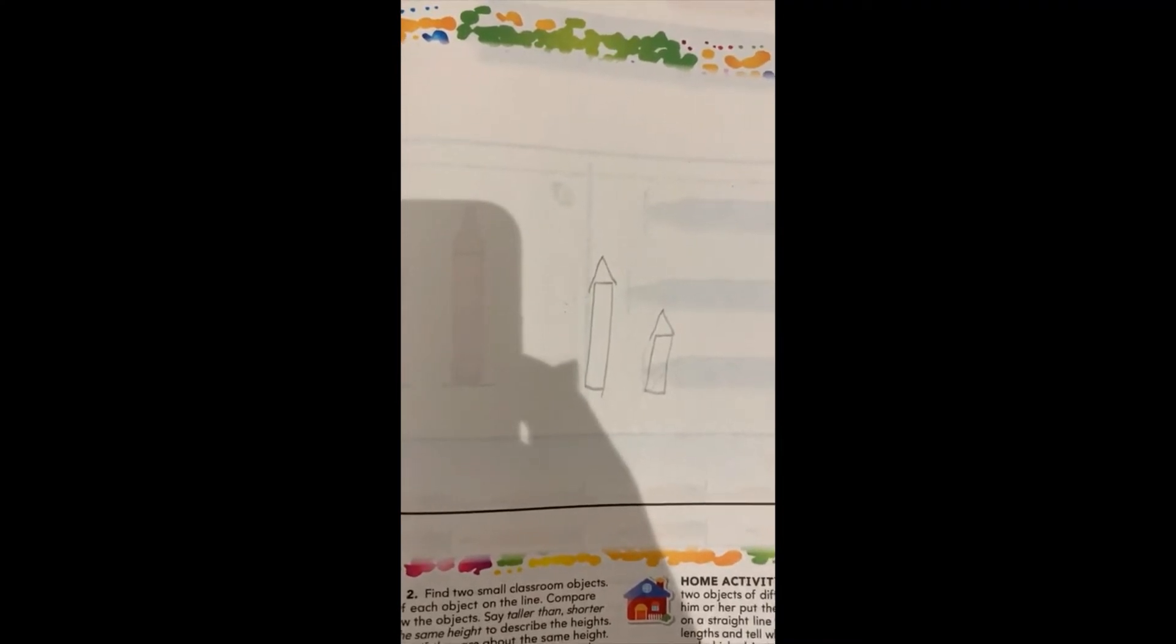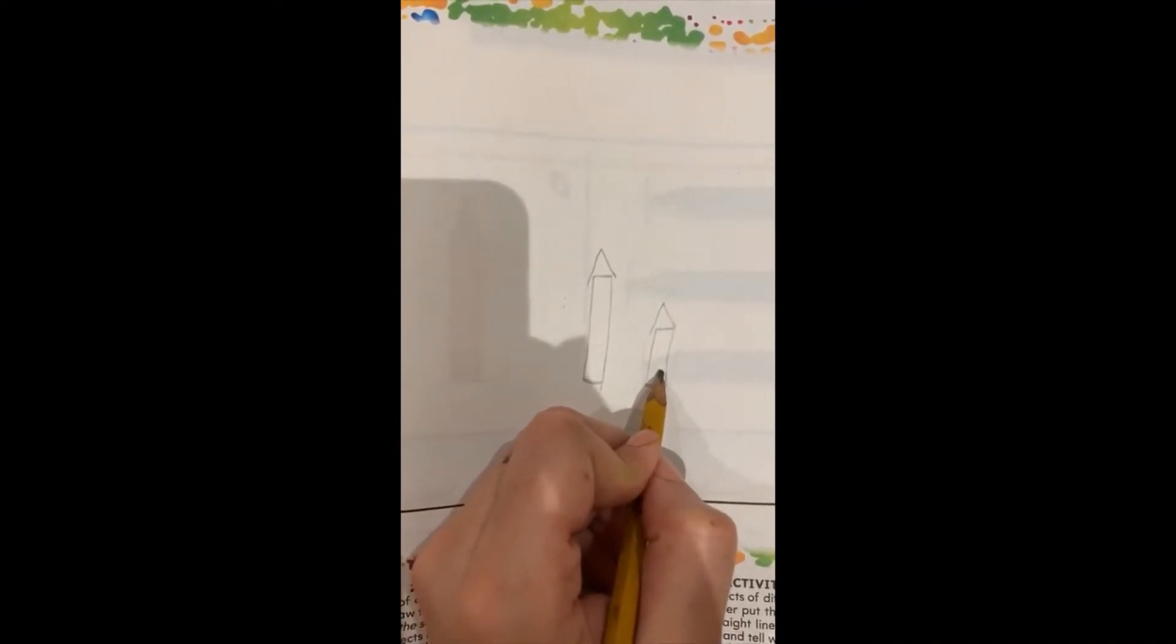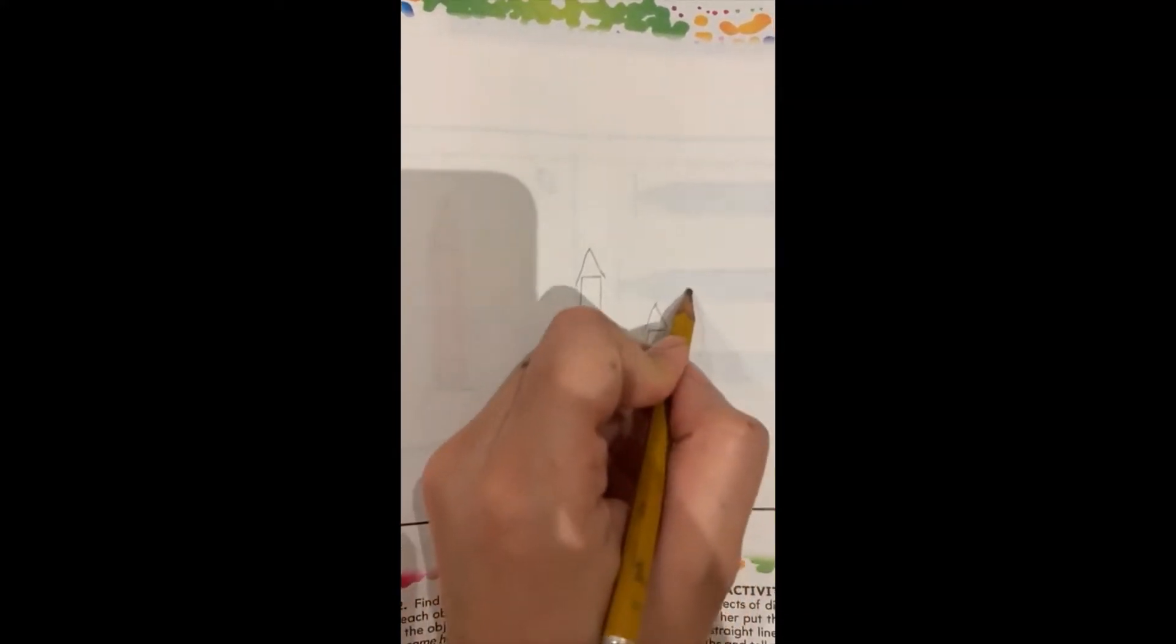Are they about the same height? No. So, where is the shorter crayon? Yes! This one is shorter. Let's circle the shorter one. Excellent!